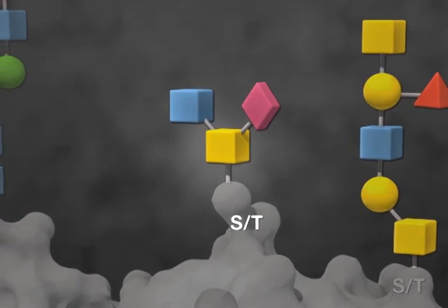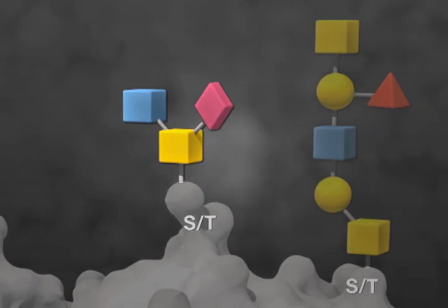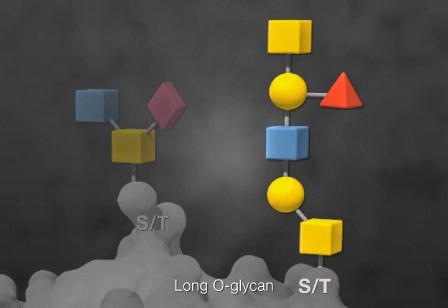O-glycans are often short chains consisting of only a few sugars, or they can be extended by the addition of different monosaccharides, resulting in a longer chain.